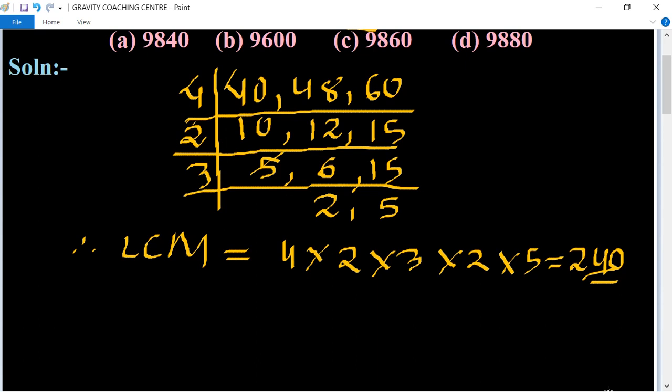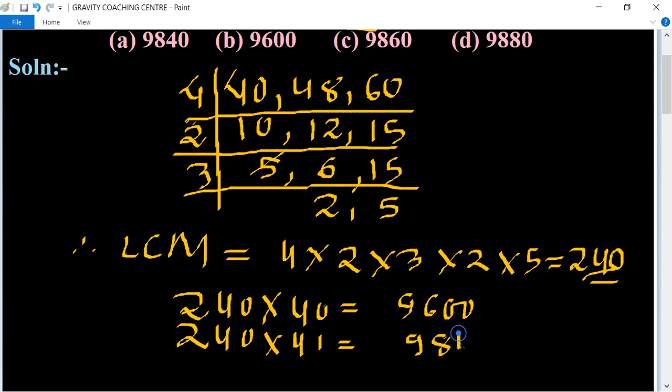Now we have to find the greatest 4-digit number which is divisible or a multiple of 240. So first we multiply 240 by 40, equals 9600. If we multiply by 41, it will become 9840. And if we multiply by 42, their product equals 10080.